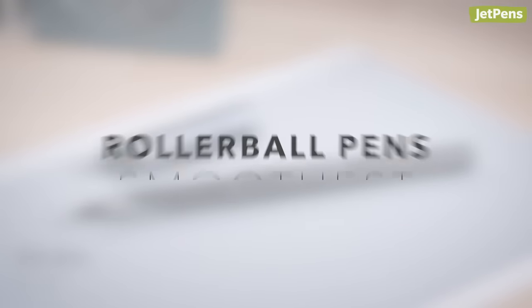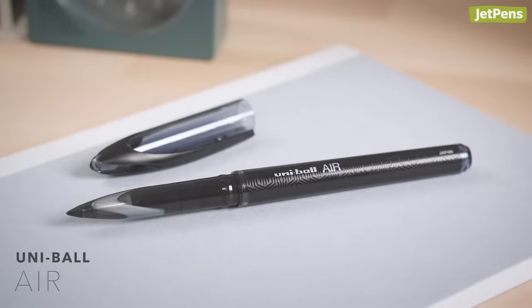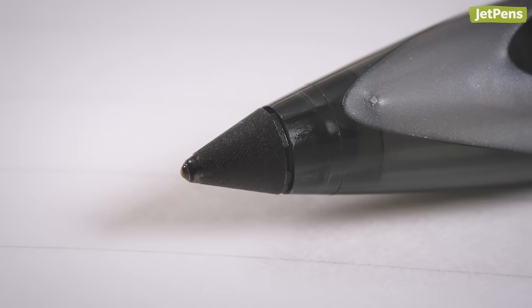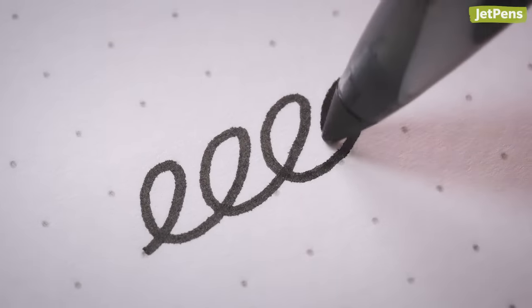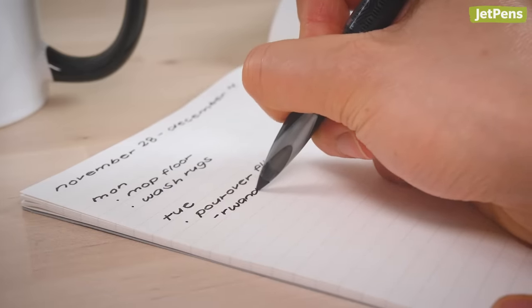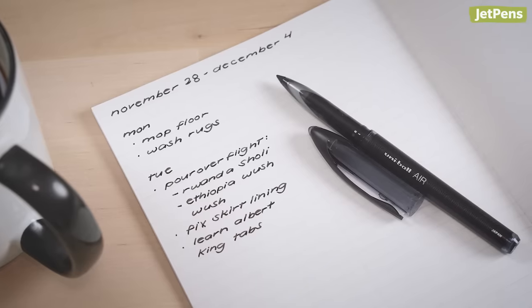Rollerball pens Smoothest. The Uniball Air glides across the page thanks to its uniquely designed tip. It's encased in plastic rather than metal, which produces less friction on the page. The Air's 0.7mm tip size also puts down plenty of ink, ensuring an even more effortless writing experience.